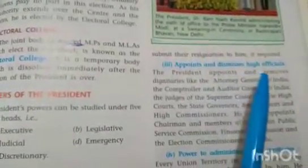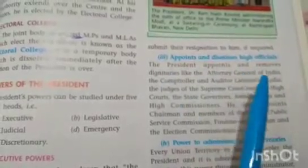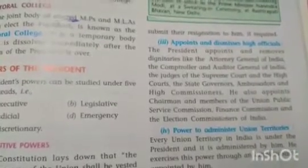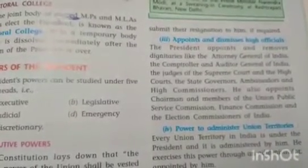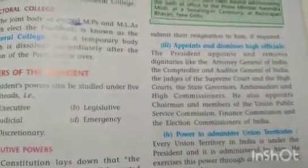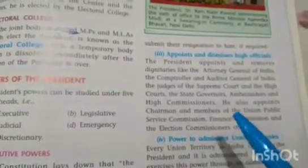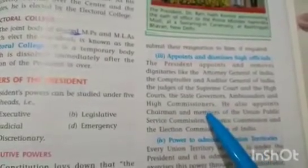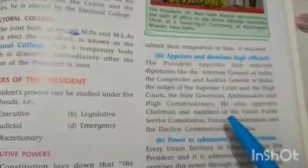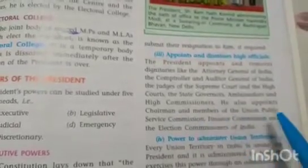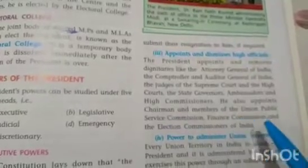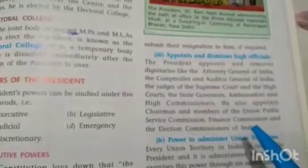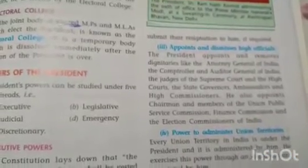Appointment and dismissal of high officials: the President appoints and removes high dignitaries such as the Attorney General of India, the Controller and Auditor General of India, the judges of the Supreme Court, High Courts, and other courts, the state governors, ambassadors, and High Commissioners. He also appoints the Chairman and members of the Union Public Service Commission, the Finance Commission, and the Election Commissioner of India.